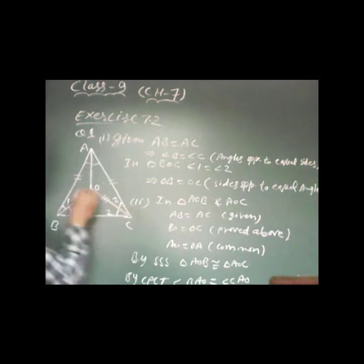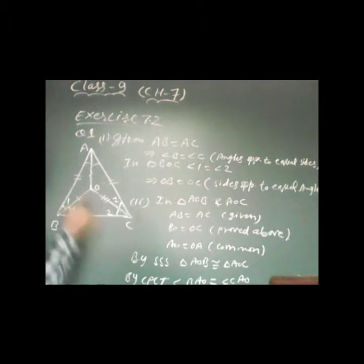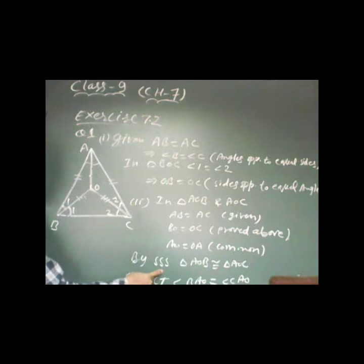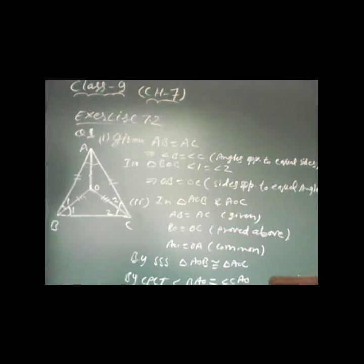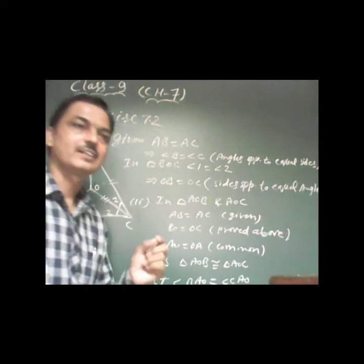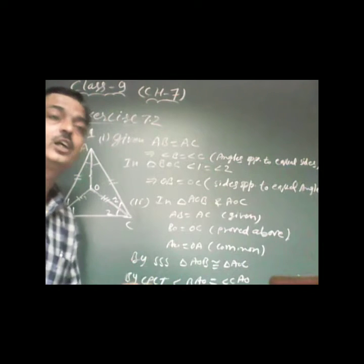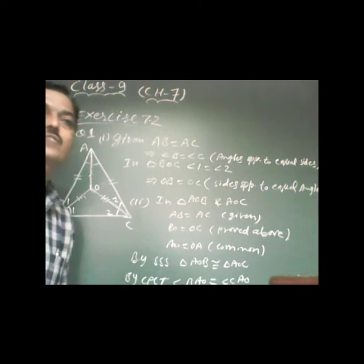By SSS congruence, triangle ABO is congruent to triangle ACO. Once we prove the triangles are congruent, we can use CPCT to prove the remaining corresponding parts equal. Therefore, angle BAO is equal to angle CAO — which means AO bisects angle A.